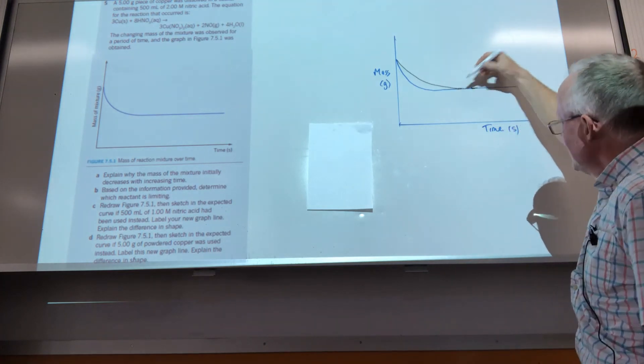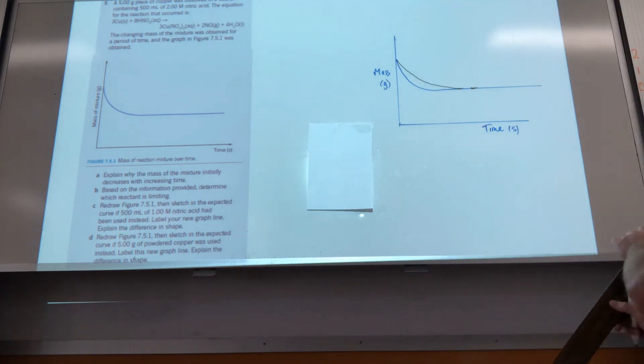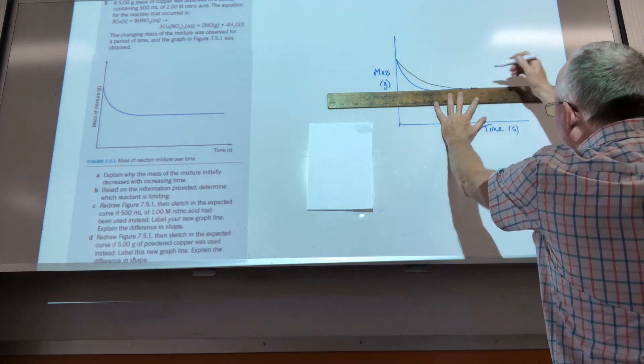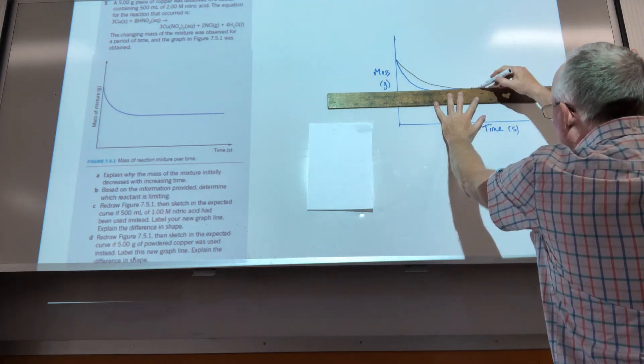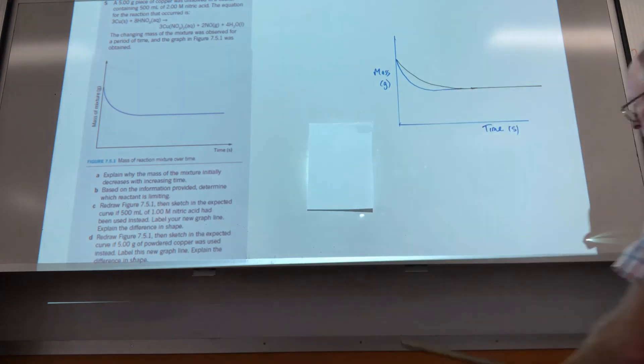And now I'm going to very carefully show how the rate of decrease of mass is slower. The reaction takes longer to go to completion, so the graph is going to look something like that.